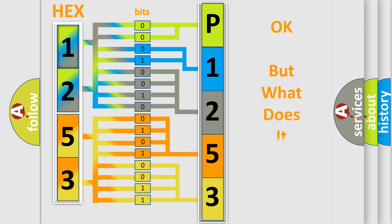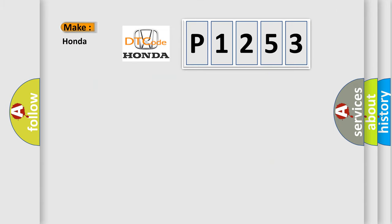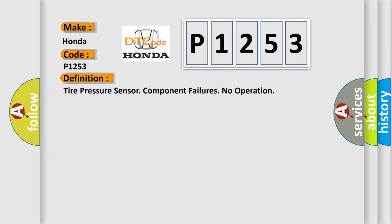The number itself does not make sense to us if we cannot assign information about what it actually expresses. So, what does the diagnostic trouble code P1253 interpret specifically for Honda car manufacturers? The basic definition is: Tire pressure sensor component failures no operation. And now this is a short description of this DTC code.